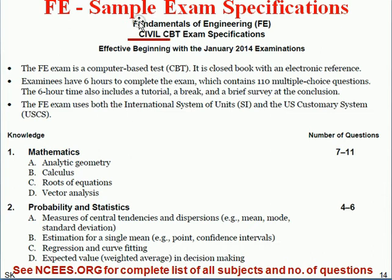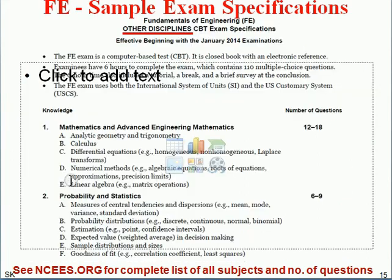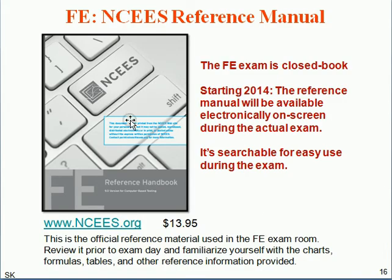The exam specification for civil engineering shows, for example, mathematics accounts for 7 to 11 questions, probability and statistics for a set number, and so on. Visit NCEES.org for the complete specification list. The FE Reference Manual is an excellent resource — you can buy it or download it for free from the NCEES website.